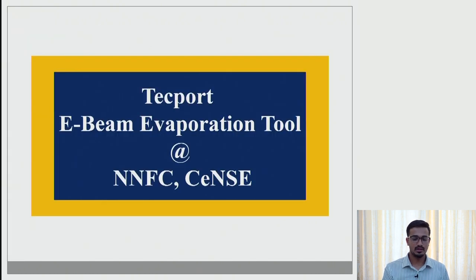This is a tool at NNFC. As you can see, crucibles can be housed and we have a shutter which is right on top of the source and here it is a ion etching or ion assisted deposition tool.